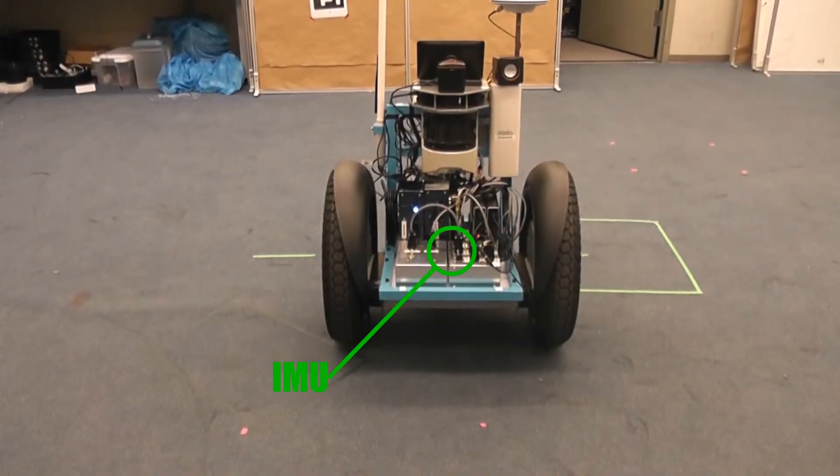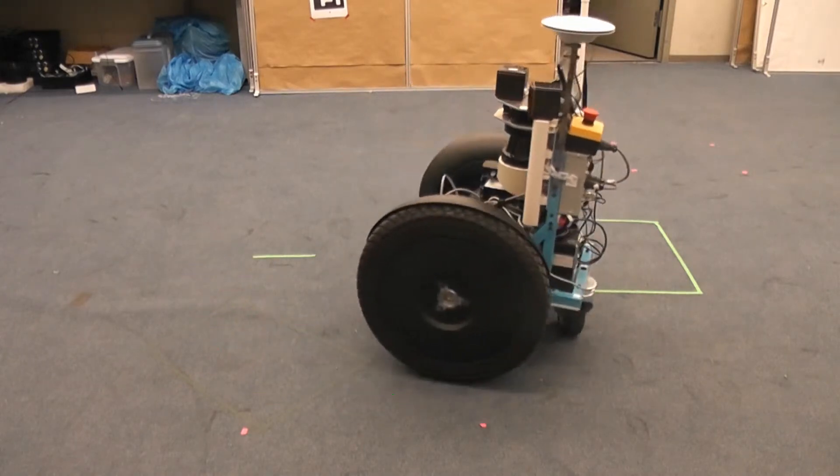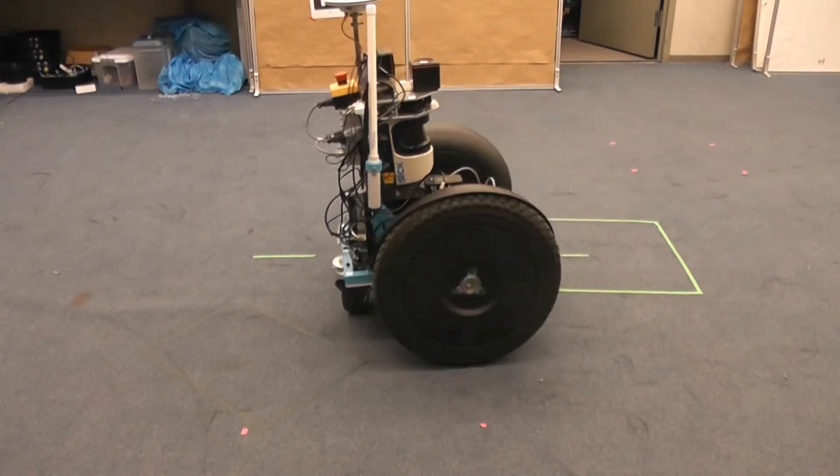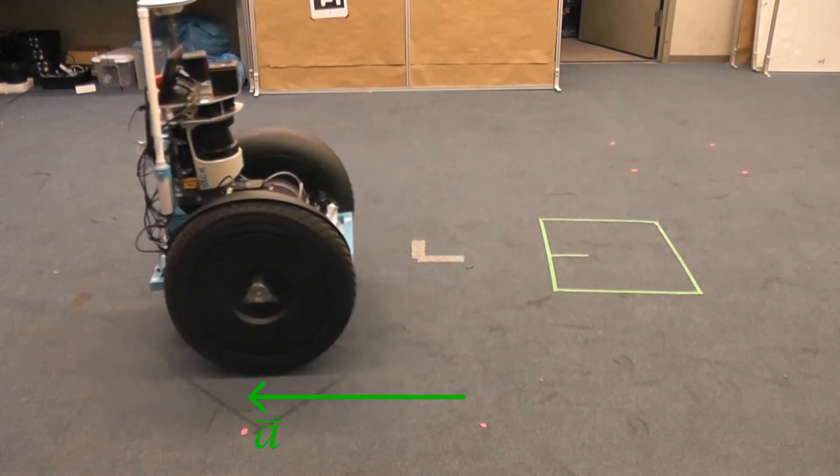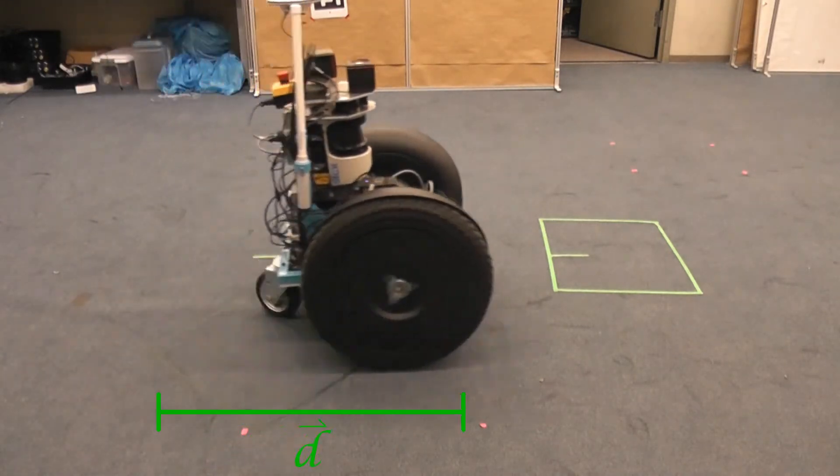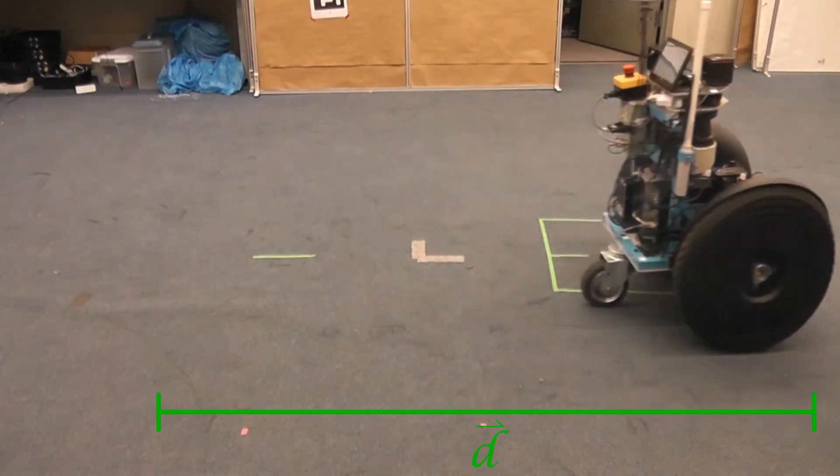Our inertial measurement unit sits inside the Segway base itself and can sense how much we've rotated and the direction that we are accelerating. We also use the odometry readings from our wheels to tell how far we've traveled.